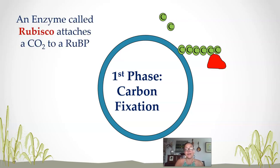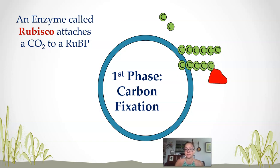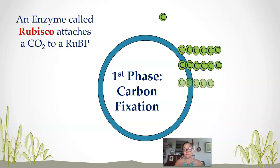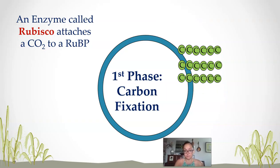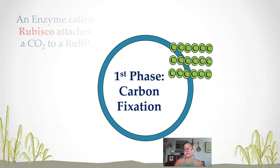This happens three times for those three RuBPs. The RuBisCO enzyme incorporates carbon dioxide — carbon fixation, taking it from the air and incorporating it into a molecule — forming three six-carbon molecules. So now we are at 18 carbons.